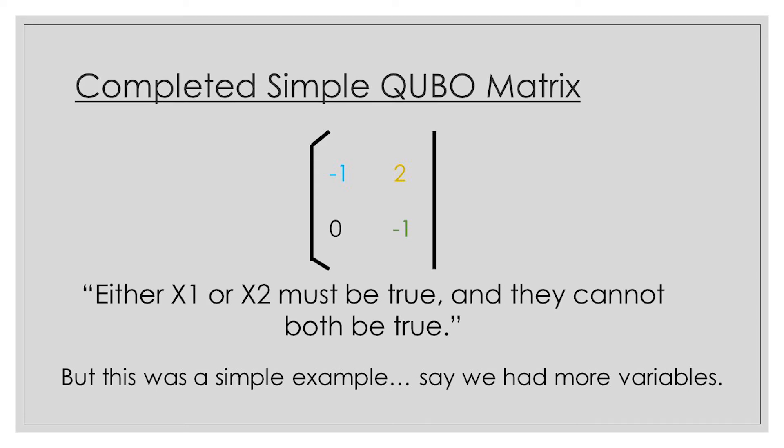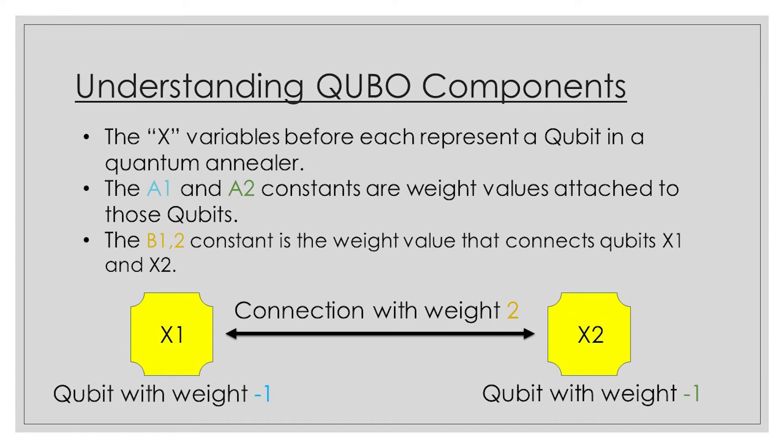But what we found now was a simple 2 by 2 matrix. Some conditions are much longer than our simple example. How would we write a QUBO for these complex conditions? To answer that question, we'll have to discuss what our constants and variables actually mean in a physical qubit array.